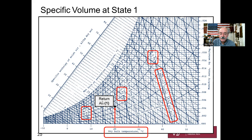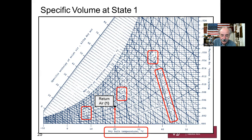Reading specific volume at state one: the diagonal lines show 0.80 and 0.85 as reference values. Our state one point falls between 0.83 and 0.84, so we estimate approximately 0.83–0.84 m³/kg dry air.